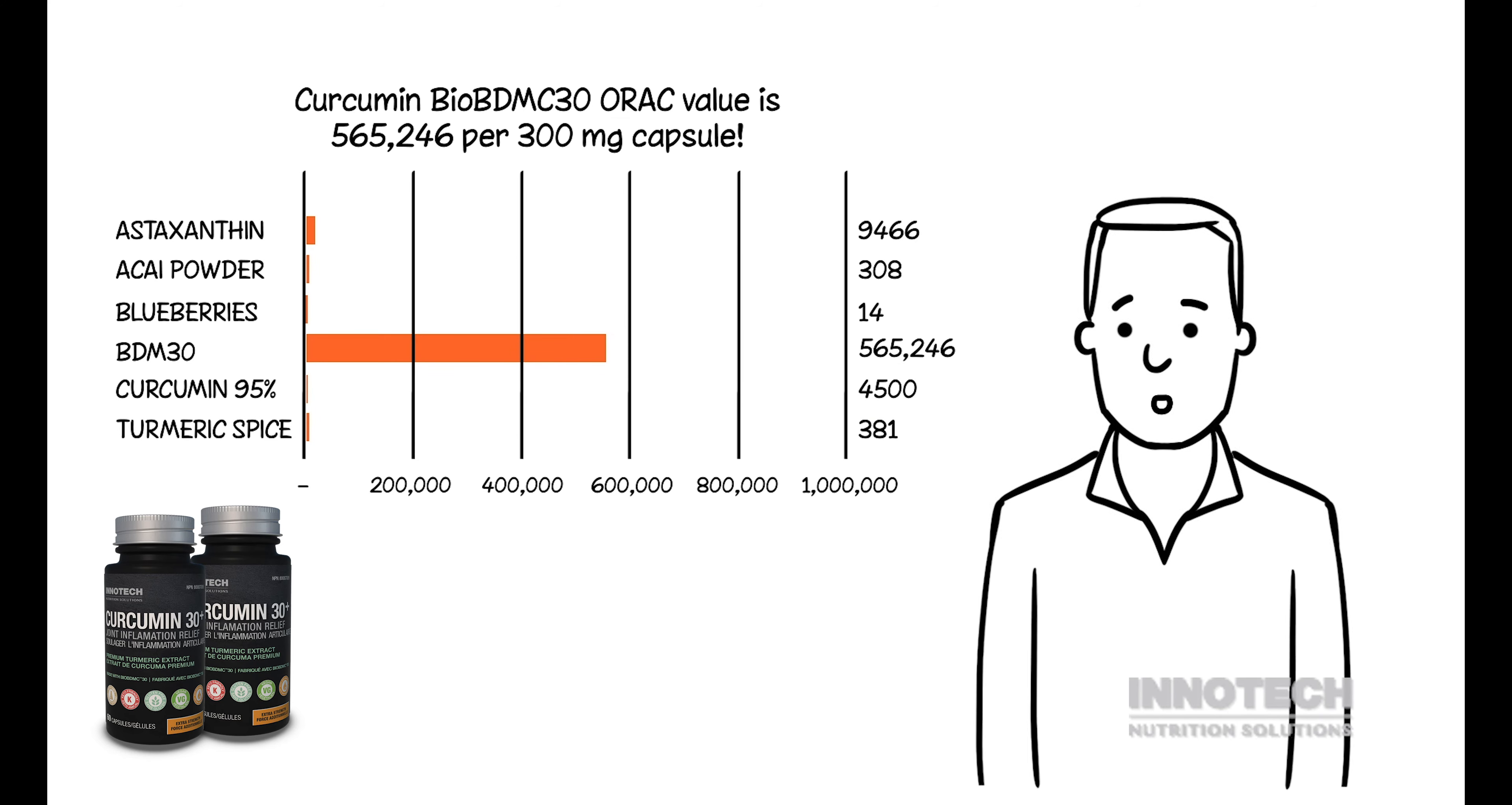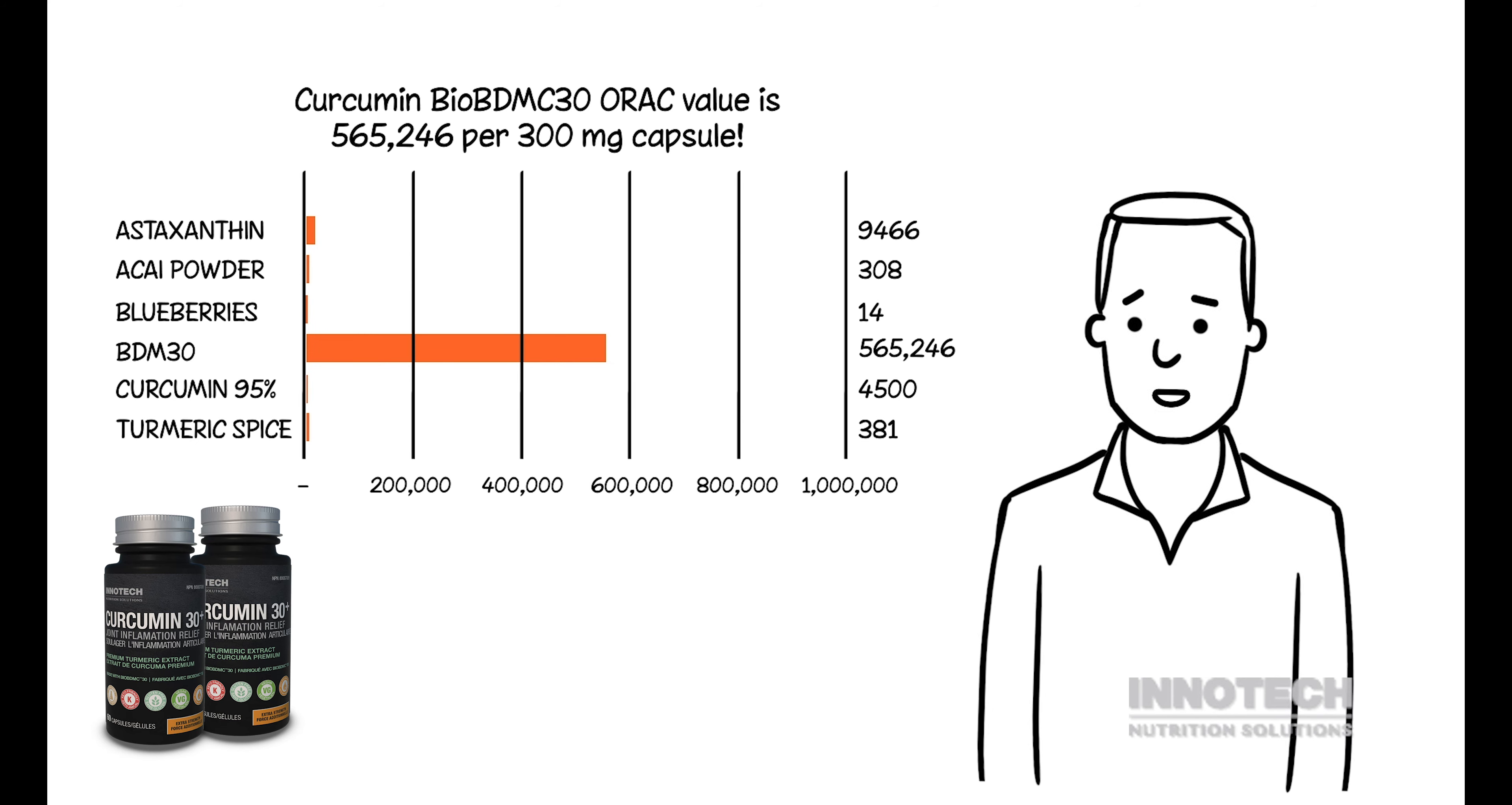Curcumin BioBDMC30 ORAC value is 565,246 per 300 milligram capsule. ORAC is oxygen radical absorbance capacity, and it represents the antioxidant's ability to neutralize tissue-damaging oxidation. Curcumin BioBDMC delivers over 565,000 units of protection per 300 milligram capsule.